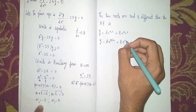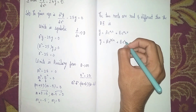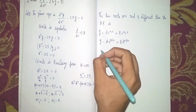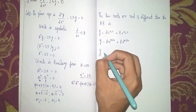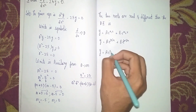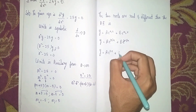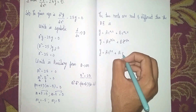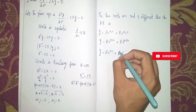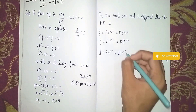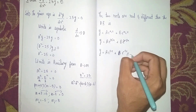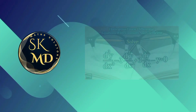Substituting m₂ equals −5, our final answer is y equals A·e^(5x) plus B·e^(−5x). Thanks for watching.